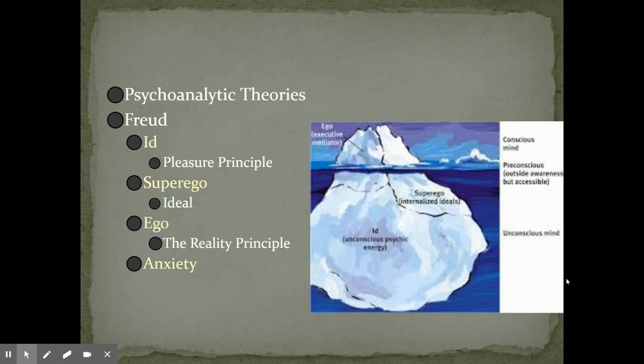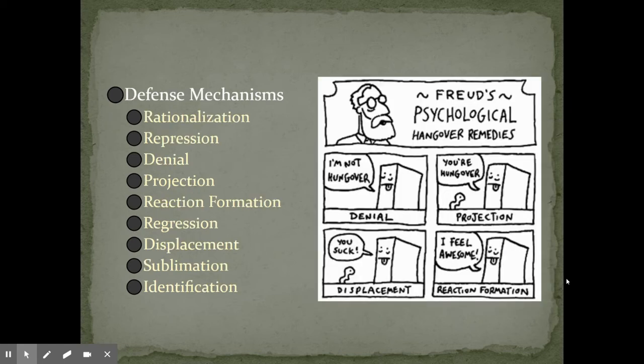Freud believed that when the ego can't satisfy that urge while maintaining the ideals of the superego, that's where we experience anxiety. Anxiety where we feel this kind of feeling that something is going to be wrong, but we can't put an idea on what it is. To combat anxiety, Freud says that we carry out nine distinct defense mechanisms.